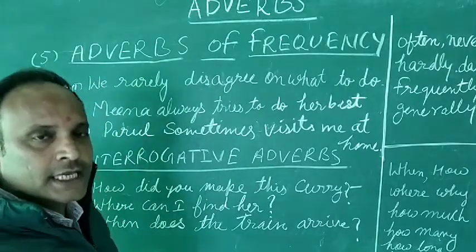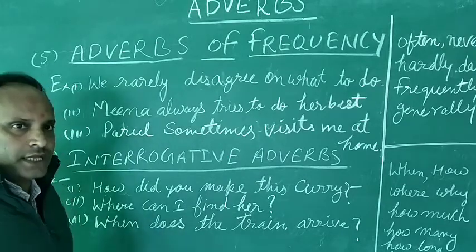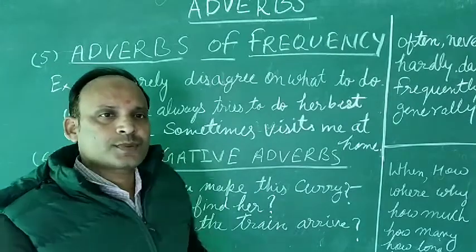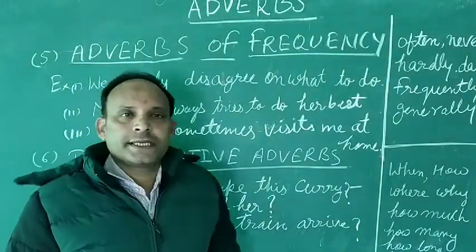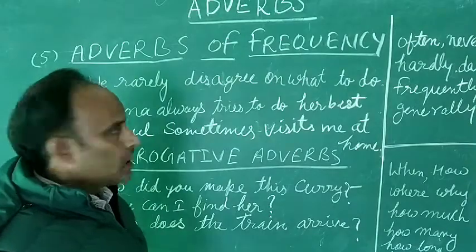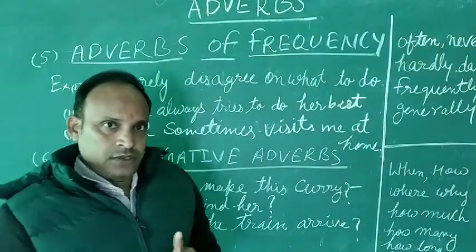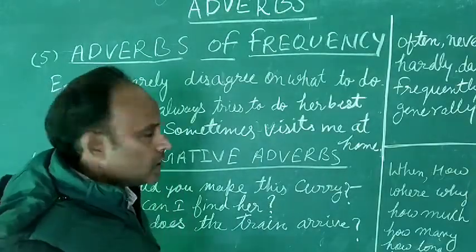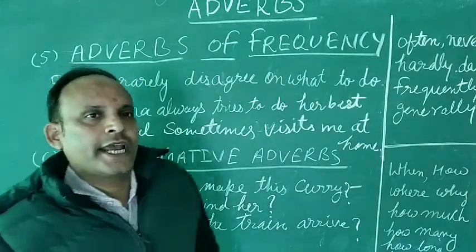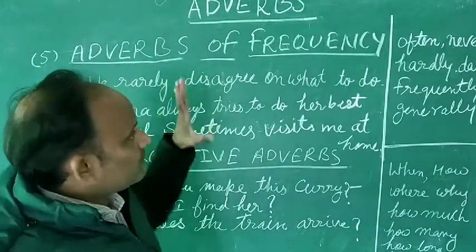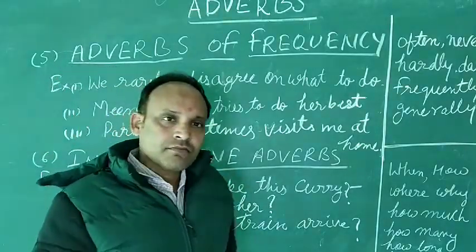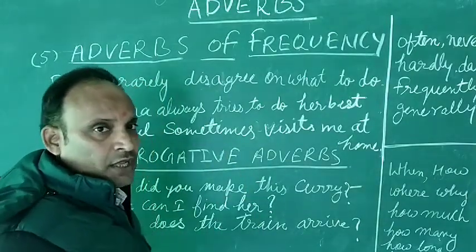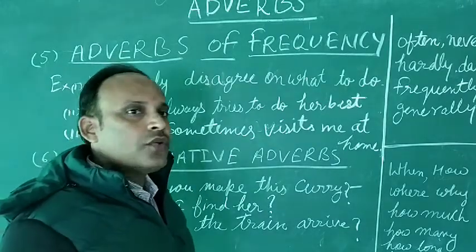Adverb of Frequency tells us about how often and how frequently the action has taken place. There is a difference between the Adverb of Frequency and the Adverb of Time. Sometimes students get confused. Adverbs of Time always answer the question 'when', while in the Adverb of Frequency, it answers the question 'how frequently' or 'how often'.